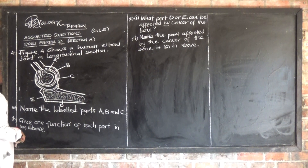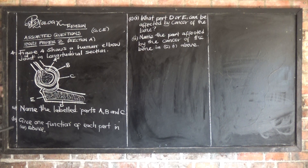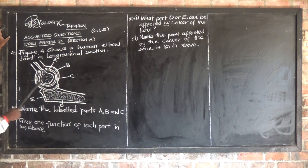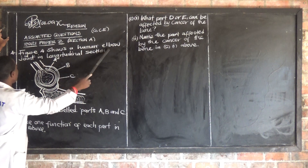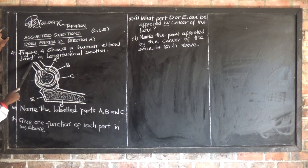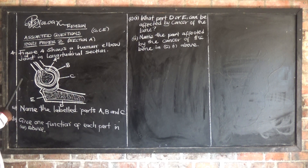Let's look at question number 4, section 8. The question is on the skeletal system. It says figure 4 shows a human elbow joint in longitudinal section — so this is a human elbow joint shown in longitudinal section.